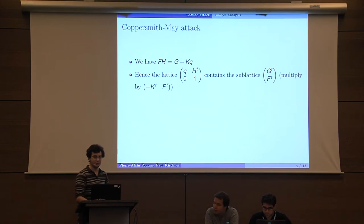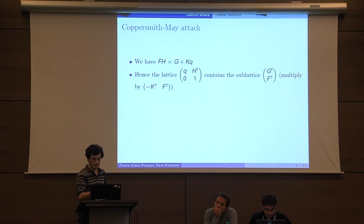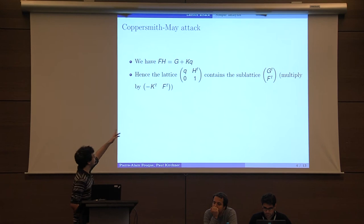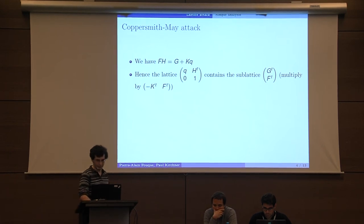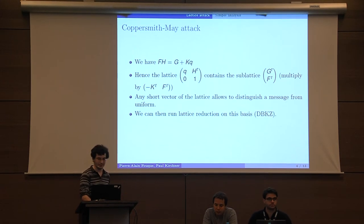This lattice contains a sublattice which is of high rank but low volume. Why is this a sublattice? You just multiply by this vector, so the bottom row is obvious and the upper row is just given by the equation above transposed. We also have that any short vector of this lattice with a low norm can distinguish a message from uniform, and so we can run lattice reduction on this basis such as BKZ.